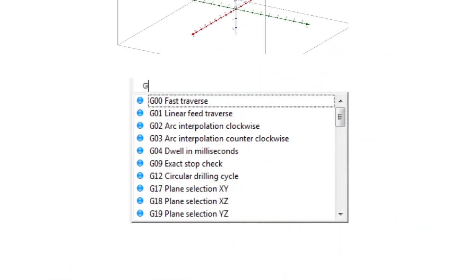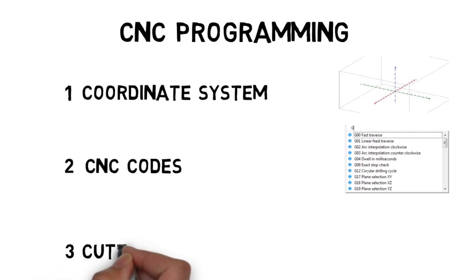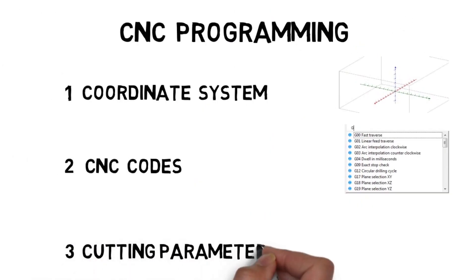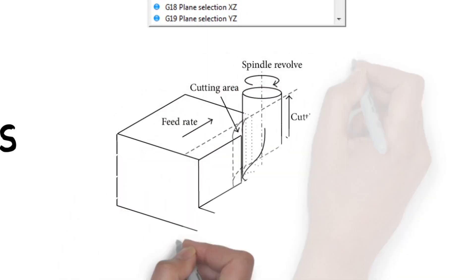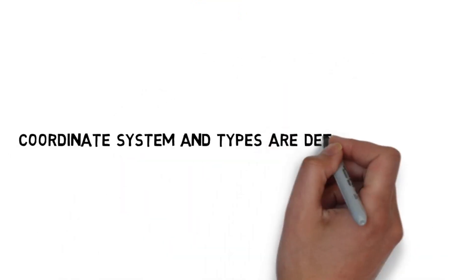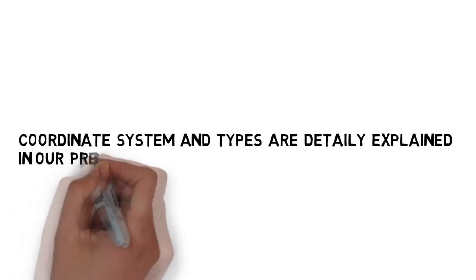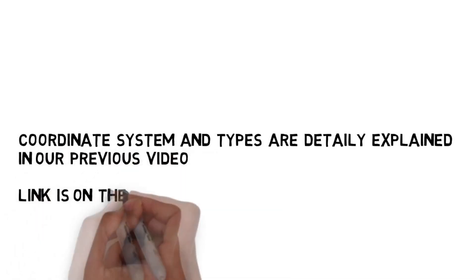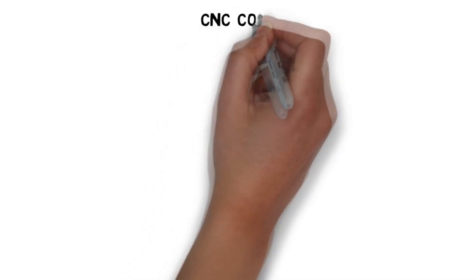Number two, CNC codes which are used for various program and machine functions. Number three, cutting parameters which include speed, feed, and tool engagement. Coordinate system and types are explained in our previous video tutorial - link is given in the description. This video will explain the CNC codes in detail.